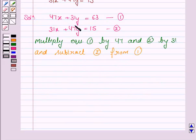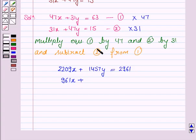So multiplying equation 1 by 47 gives us 47 into 47 is 2209x plus 31y into 47 is 1457y is equal to 63 into 47 is 2961. Now multiplying equation 2 by 31: 31x into 31 is 961x plus 47y into 31 is 1457y is equal to 15 into 31 is 465.